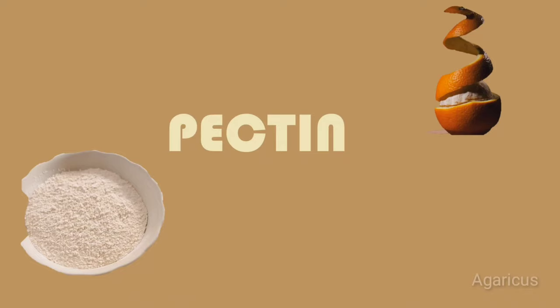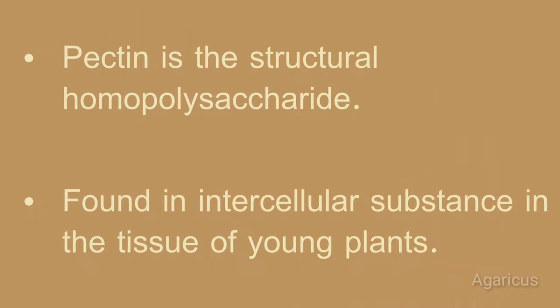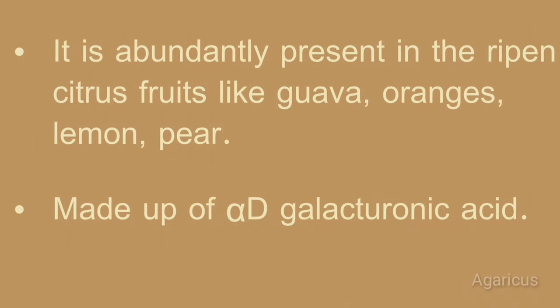Welcome back to our channel. Now we are discussing pectin. Pectin is an example of a structural homopolysaccharide found in the intracellular substance in the tissue of young plants.